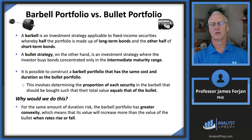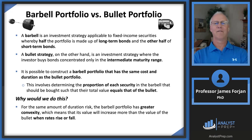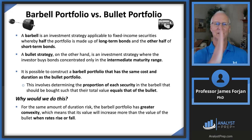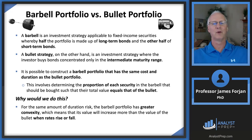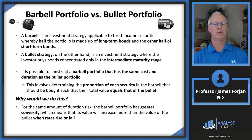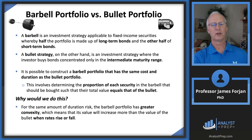Why would we do this? Recall what we said about positive convexity: bondholders who expect rates to fall love bonds with lots of convexity. For the same amount of duration risk, the barbell portfolio will have greater convexity than the bullet portfolio. This means the barbell's value will increase more than the bullet's when rates rise or fall. You win with convexity whether rates go up or down, and especially when rates fall.